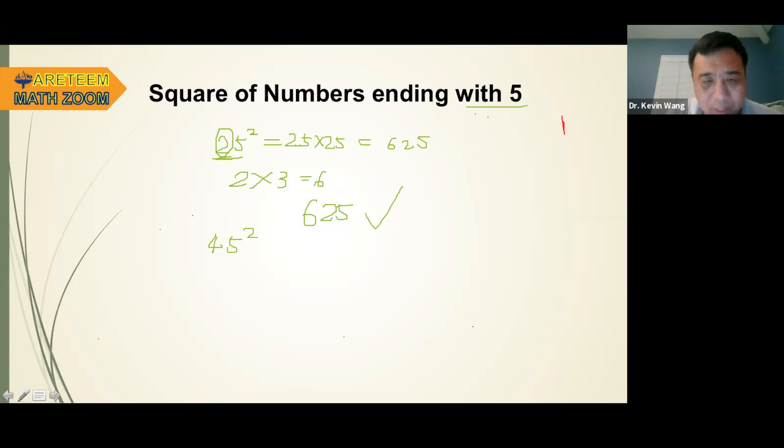So this is going to be what? What I'm going to do, look at a 4 here. 4 times the next number after 4 is 5. 4 times 5 is 20. So the answer will be 20 and 25. Just attach a 25 at the end.